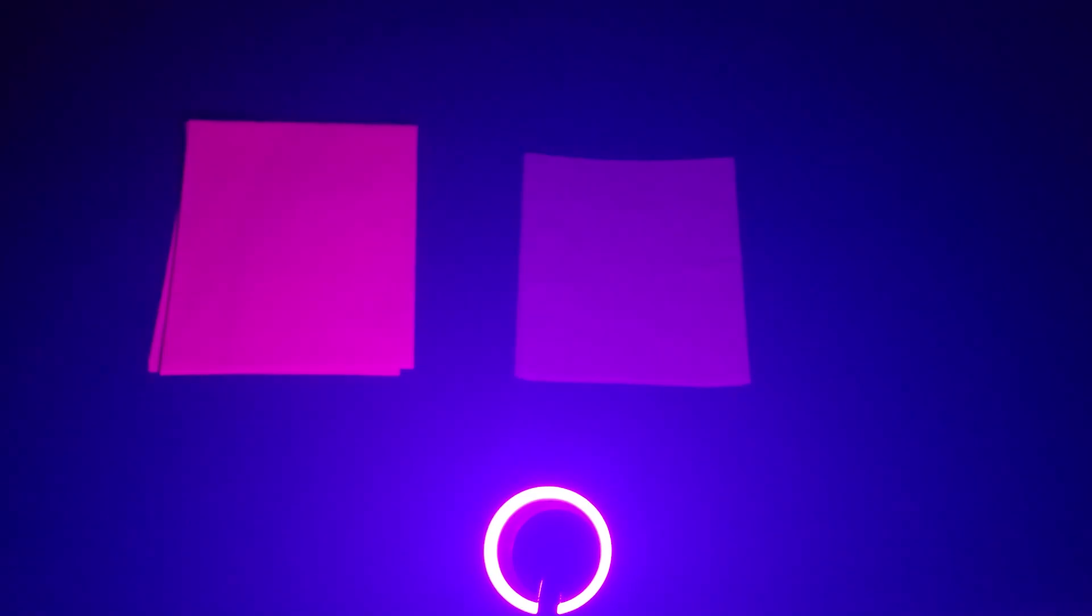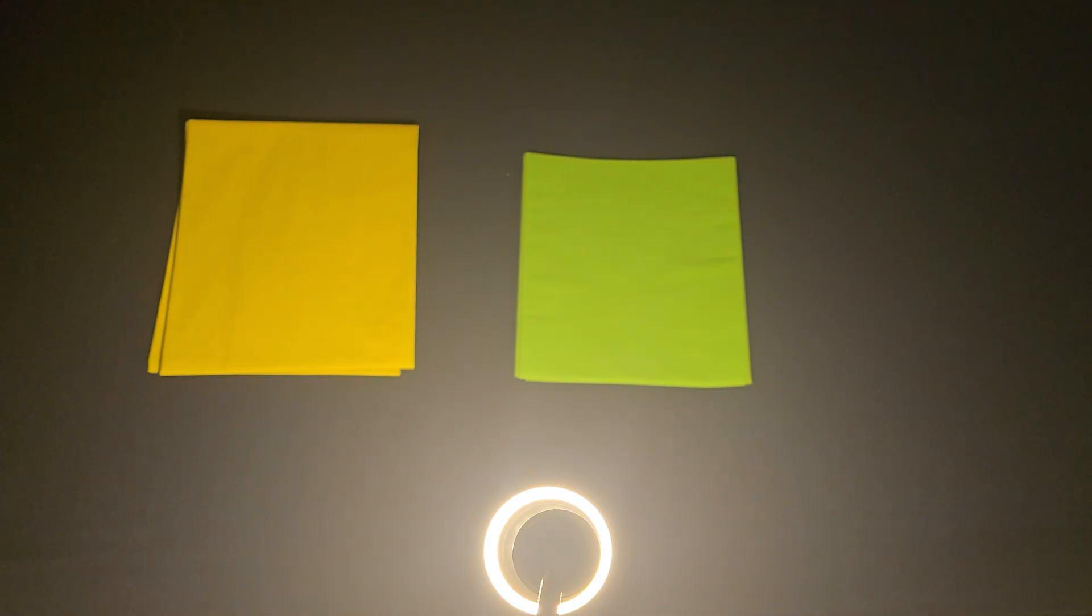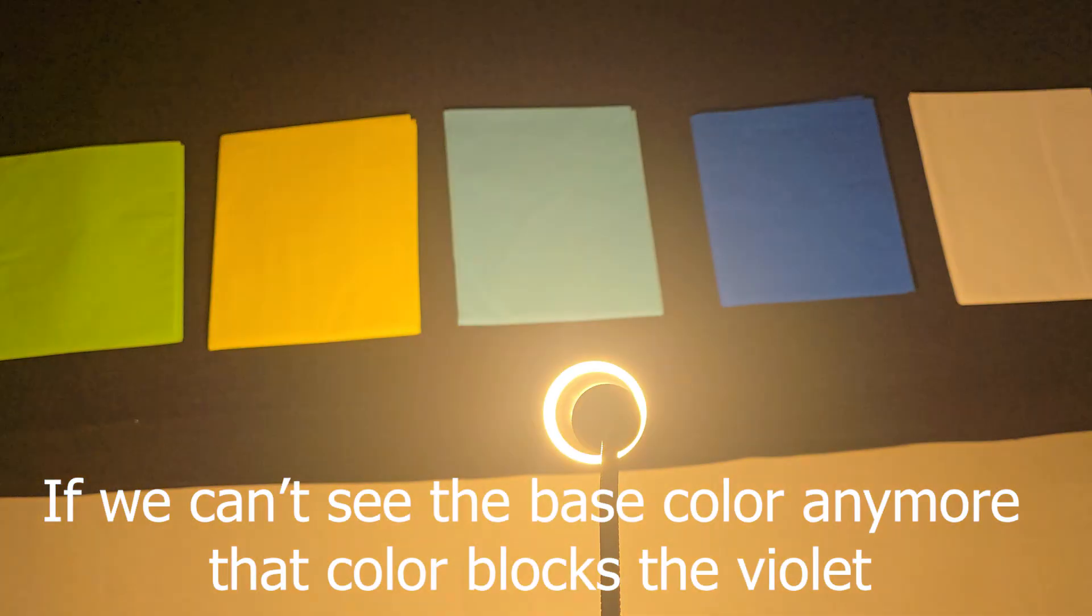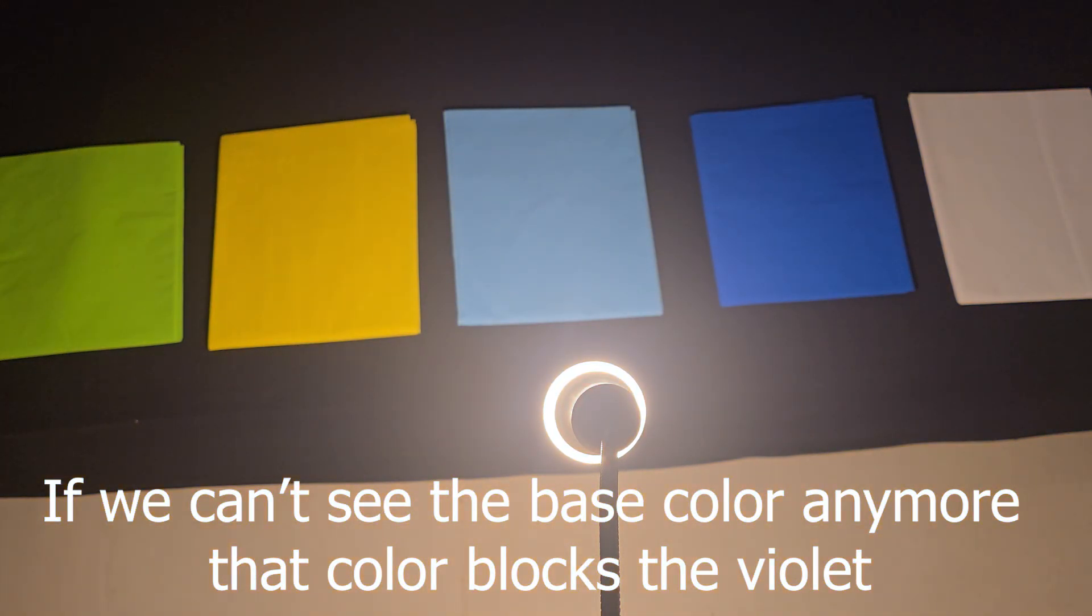The yellow cloth now looks reddish pink. That's because yellow reflects red and green. Under purple light, there's red, but no green. So the red comes through. Again, just like in budgies, yellow pigment can completely hide violet.